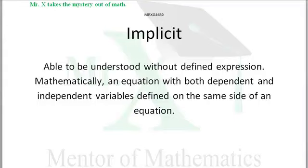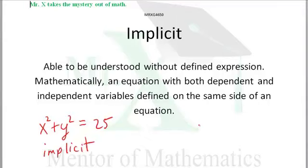If it's implicit, you have a little more work to do. You can understand it without a definite expression, like this. We would call this an implicit function. x squared plus y squared equals 25.